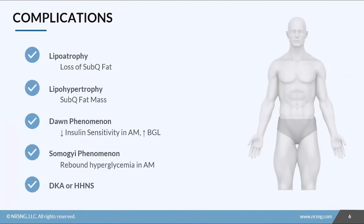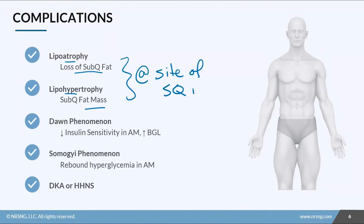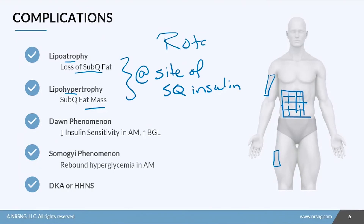There are a couple of other complications to know about, especially for patients receiving subcutaneous insulin, because they drive what we do as nurses. Lipoatrophy is a loss of subcutaneous fat, and lipohypertrophy is an extra growth or fat mass — both at the site of your sub-Q insulin injection. This is why we rotate sites. We split the abdomen into quadrants to rotate injection sites, and we can even split each quadrant into a quadrant. We can also use the backs of the arms or the outer thigh — anywhere with a fat pad. Make sure you are rotating sites, otherwise we're going to see issues with the sub-Q fat at that site.